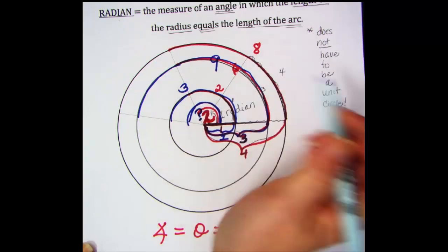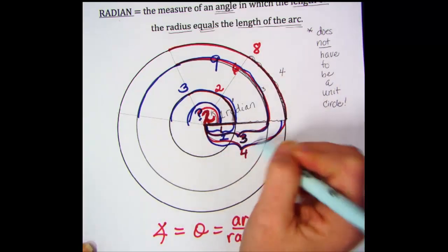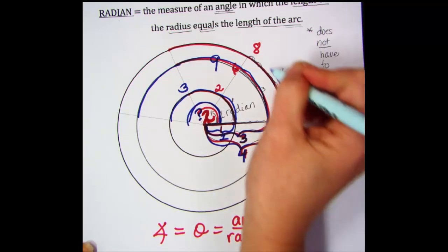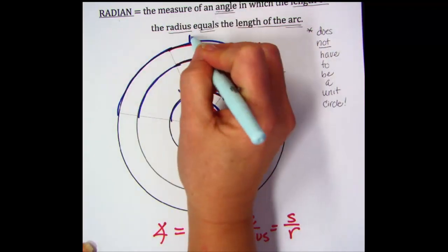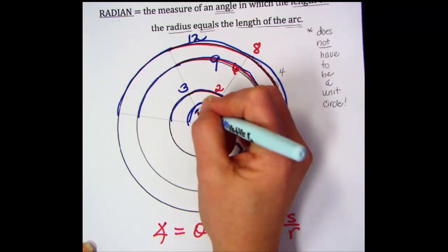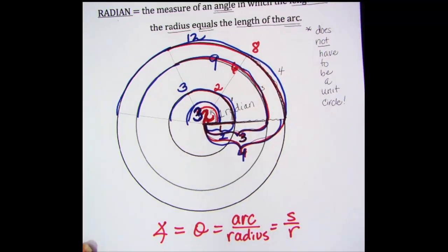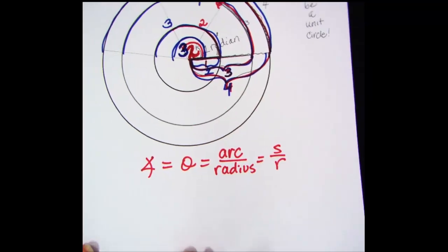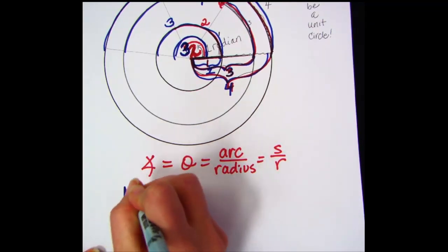Similarly, I have a radius length of four, and I go around the circle three radius lengths for an arc of twelve. So think about how many radius lengths were in the arc. That means that angle measures three radians.